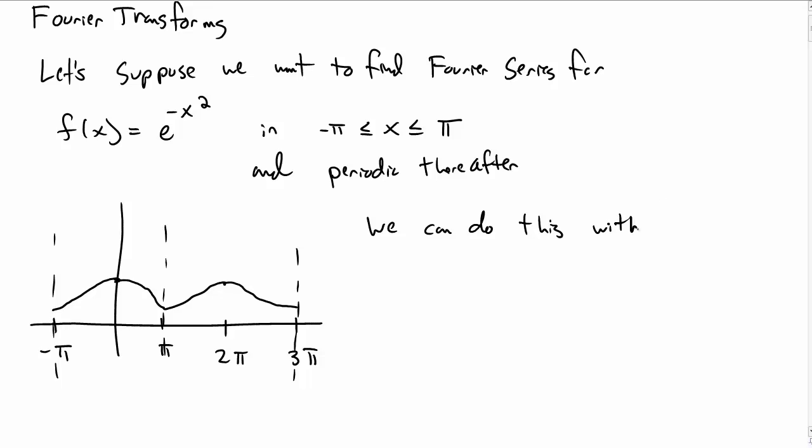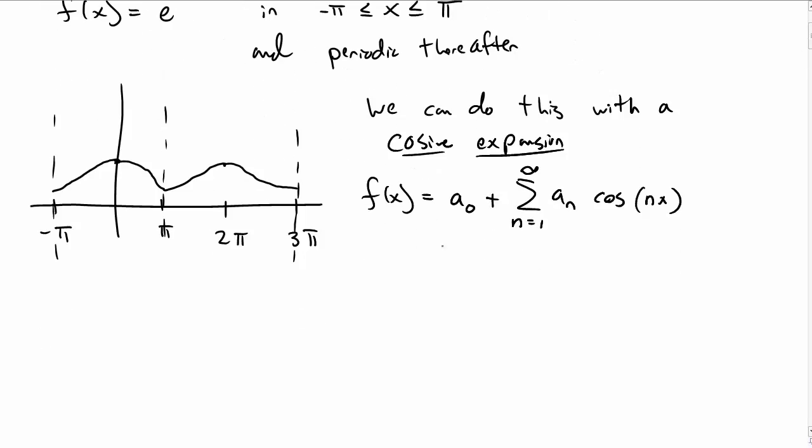So we can write this function as a Fourier cosine expansion. We write f(x) as some constant plus a sum of cosine terms. Let's write out what all of these cosine terms actually are. We have a₀, then a₁ cos(x), a₂ cos(2x), and so on.